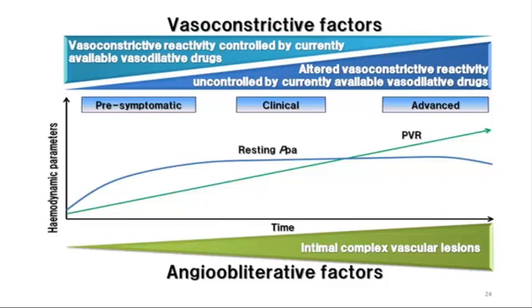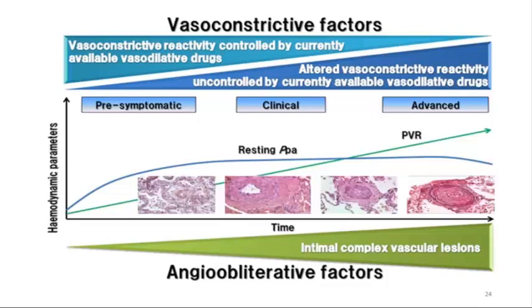The problem is that this is not a homogeneous process, so you don't know which stage the patient is in. You cannot do a biopsy and say stage 4 or stage 3 because it can be different in different parts of the lung.